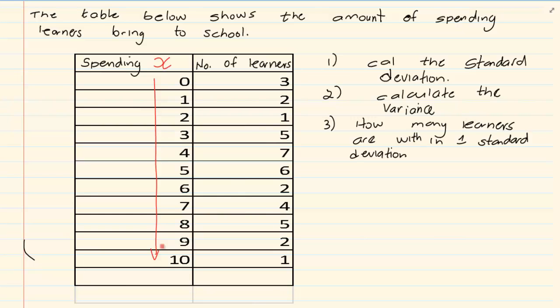Then go up with your frequency. Under 0, you are going to put 3 equals, 2 equals, 1 equals, 5 equals, 7 equals, 6 equals, 2 equals, 4 equals, 5 equals, 2 equals, 1 equals. Then you are going to press AC.